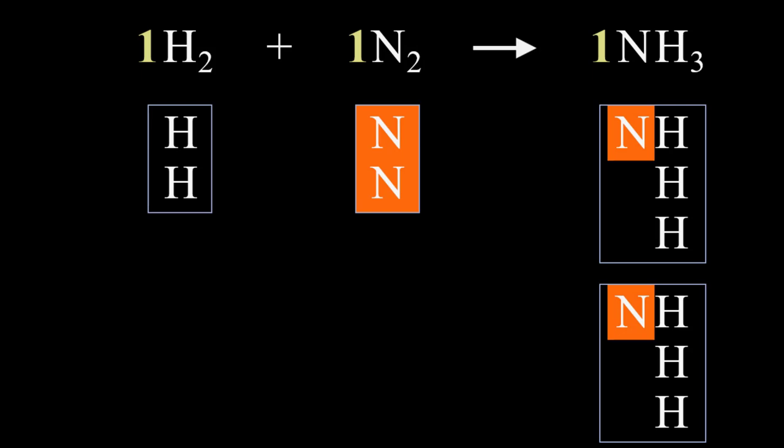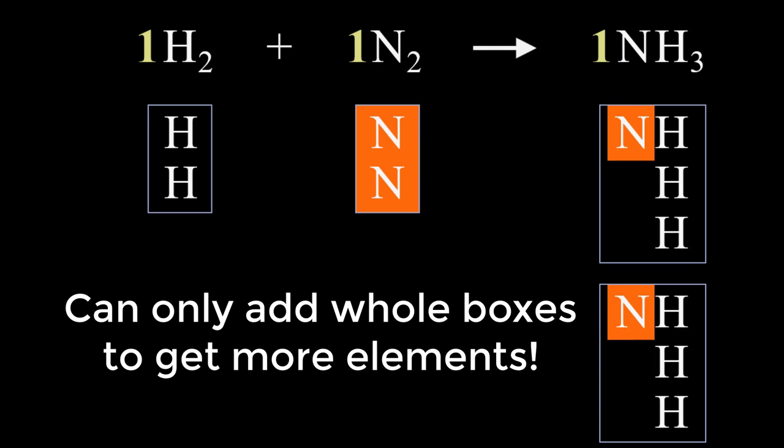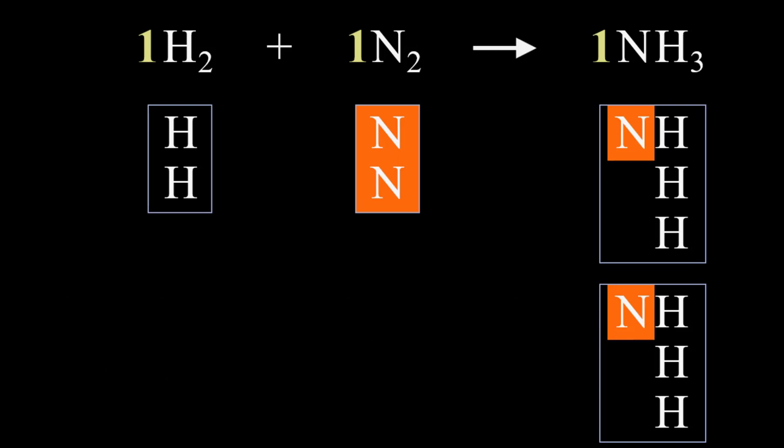The beauty of this method is that we can only add whole boxes to get more atoms of any element, and so the number of boxes we end up with become the balanced coefficients. Let's finish this equation to see how that works.